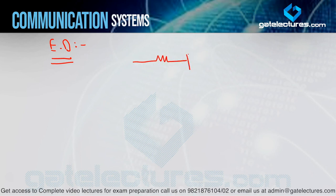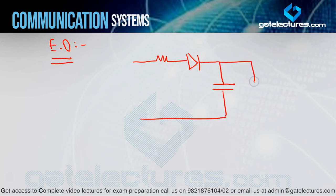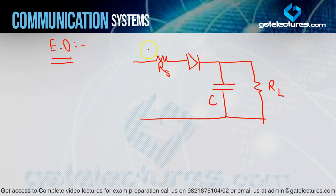So here is the circuit diagram of envelope detector. There is one resistor, one diode, one capacitor, and one more resistor. The first resistor is source RS, the last is RL, and the capacitor is C. The input to this circuit is the AM waveform, and the output we have to get is the message signal — that is our aim.